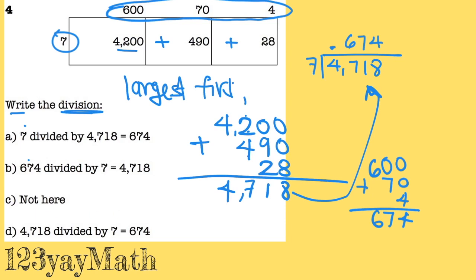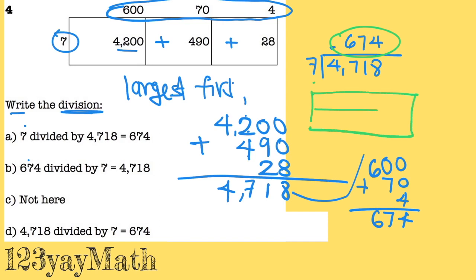It's very simple. If I do a part, part, whole, I have 4,718, and I'm going to divide it into 1, 2, 3, 4, 5, 6, 7 pieces. And each one of these is 674.